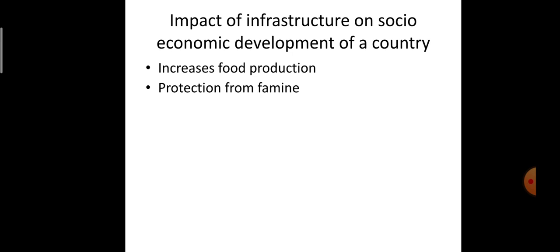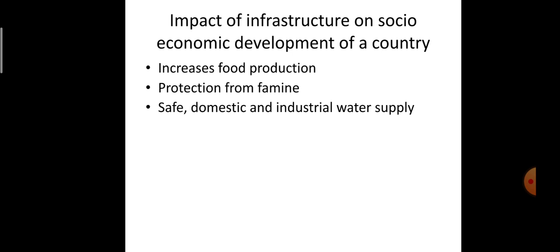Proper planning of a particular area will result in a higher degree of protection from constraints or natural disasters. Next is safe domestic and industrial water supply. A civil engineer has to check the quality of water coming through domestic or industrial effluents, and if it is not feasible, alternative measures must be taken to increase the factor of safety so that it will be potable.